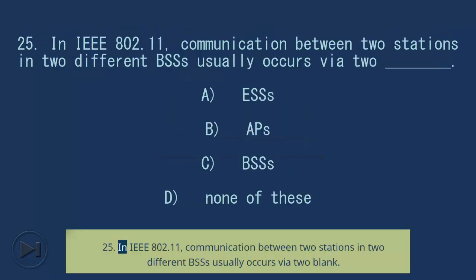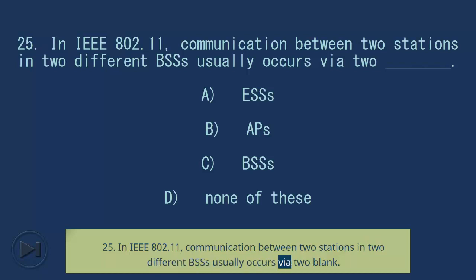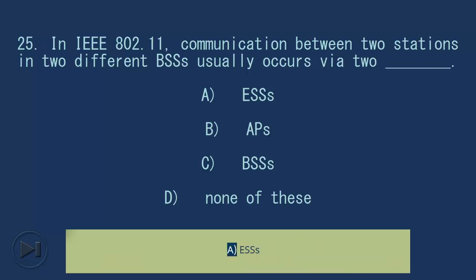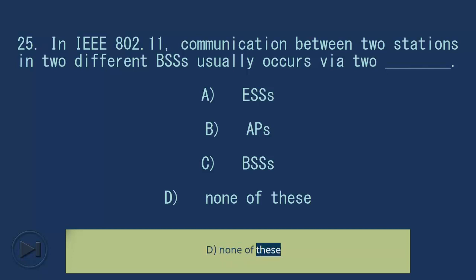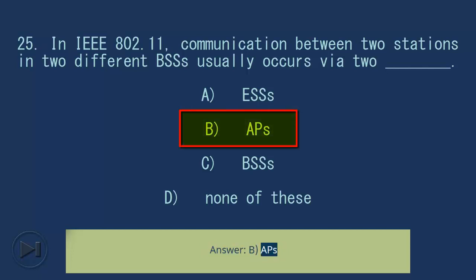Question 25: In IEEE 802.11, communication between two stations in two different BSSs usually occurs via two blank. A. ESS's, B. APs, C. BSSs, D. None of these. Answer: B. APs.